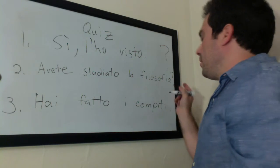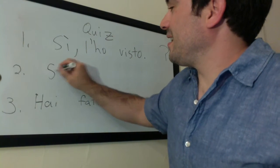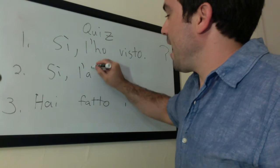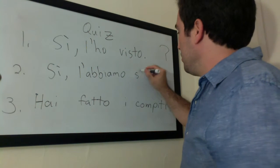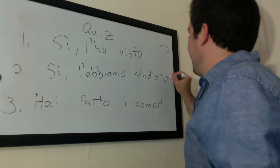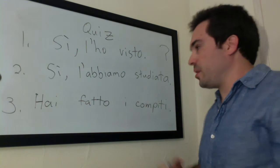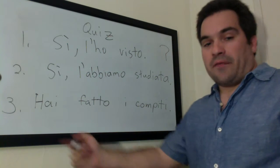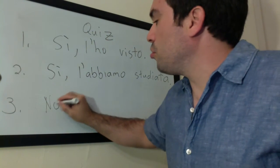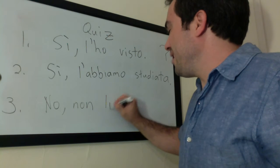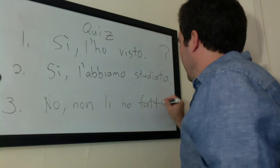Avete studiato la filosofia? Sì. L'abbiamo studiata — we, because the question was avete, so we answer with abbiamo. La filosofia is singular feminine — still the elision and it agrees: studiata. And finally, hai fatto i compiti? I'm going to answer no. I compiti — the pronoun is li. No elision with li, but still agreement: Non li ho fatti.